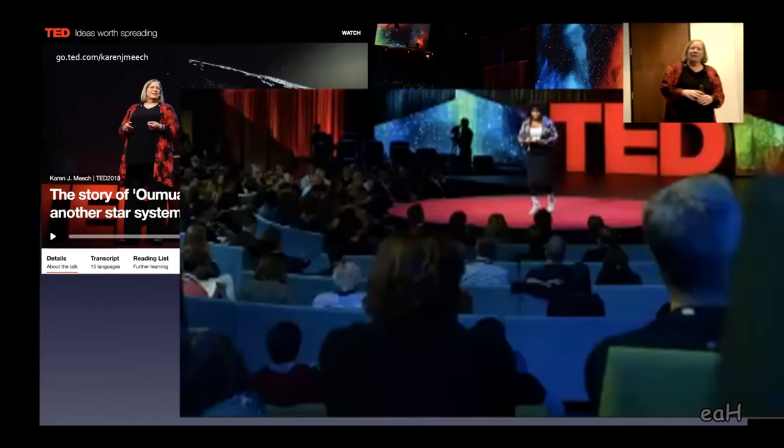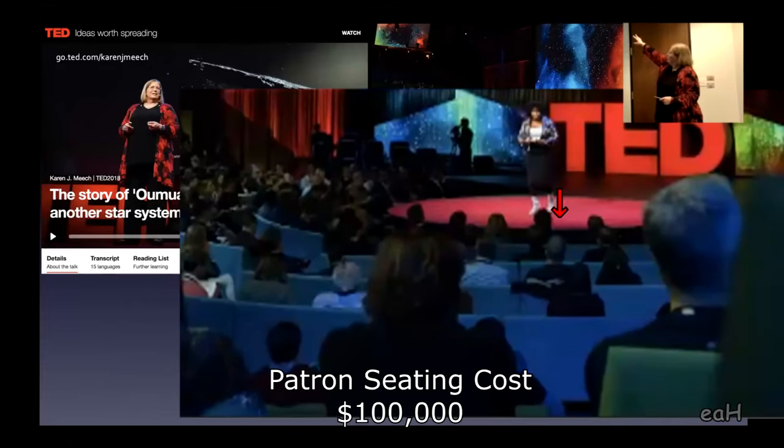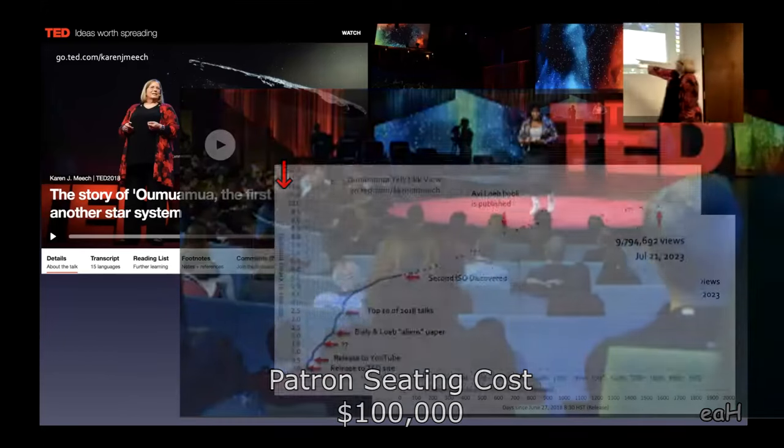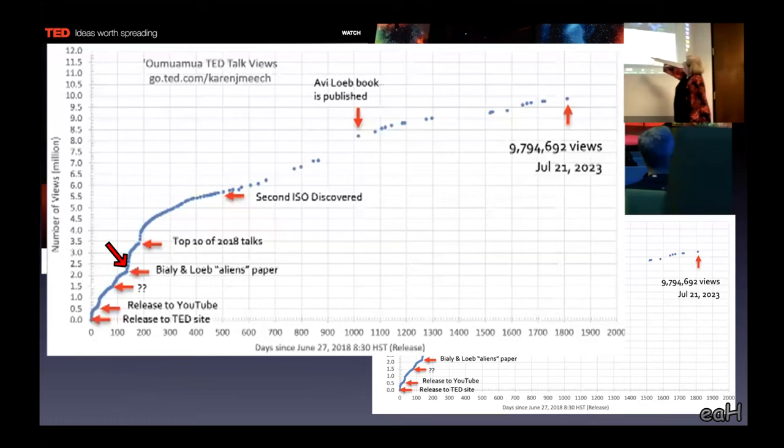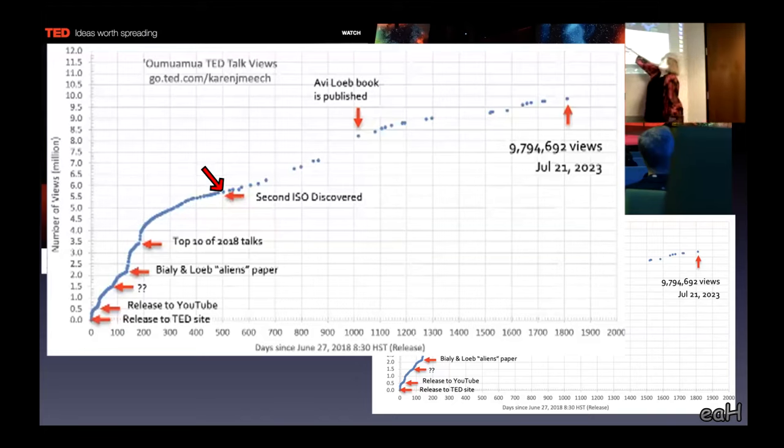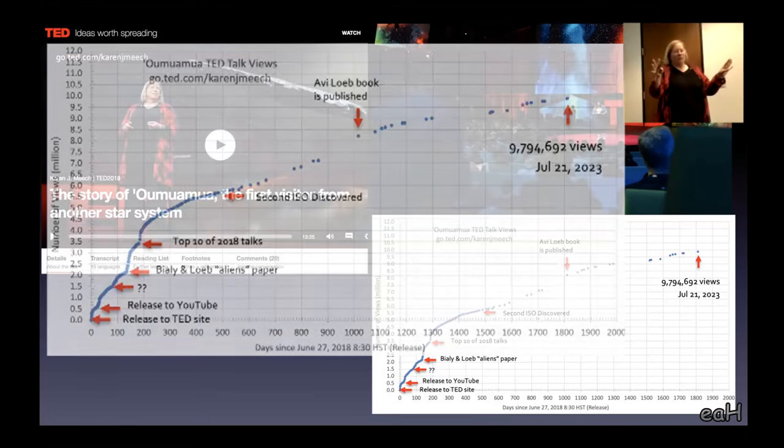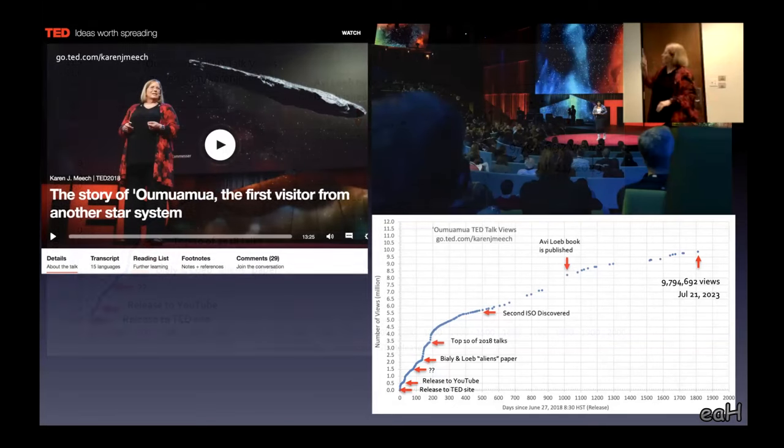Just a couple last slides at the end for fun. Ted talk. Like a true nerd, this is what the Ted audience looks like. Those really expensive seats for the blue sofas. And so like a true nerd, I've been plotting since the release of this talk to YouTube the growth of it, it's up at almost 10 million. But here's Bialy and Loeb's alien paper at Jump. The discovery of the second one didn't seem to catch the worlds of interest.